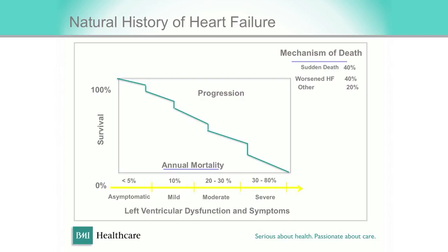As you can see, advanced heart failure — what we call stage four heart failure — has an annual mortality of around 30 to 80 percent. The good news is it is coming down, thanks to you all. The mechanism of death: 40 percent die sudden arrhythmic death, about which you have already heard, or due to worsening of heart failure, which is very disabling. And 20 percent of them die of unrelated conditions like MI or pneumonia.